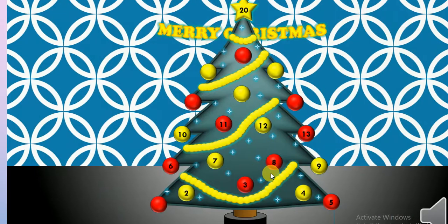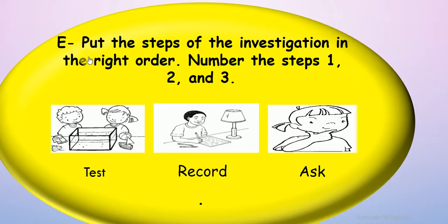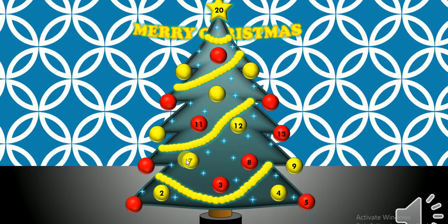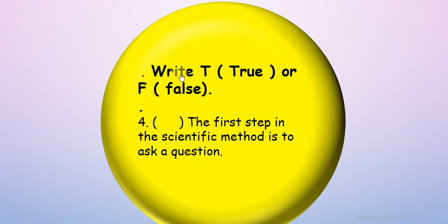Let's try number 10 — put the steps of the investigation in the right order, numbered 1, 2, and 3. We have: your test, record, ask. We start with what? First we ask a question, then we make the test, and from the test we can record some data. So: ask is number one, test is number two, and record is number three.